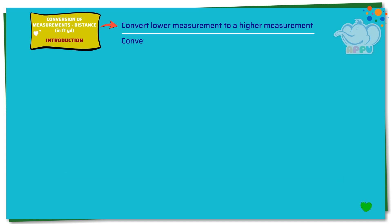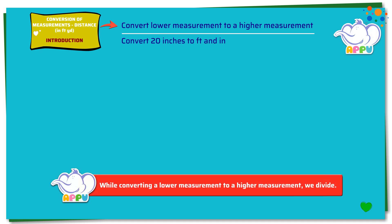Convert 20 inches to feet and inches. Here we need to find how much is 20 inches in feet and inches. We know that 12 inches equals 1 foot.